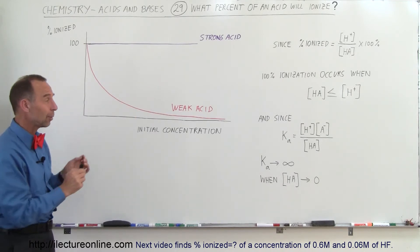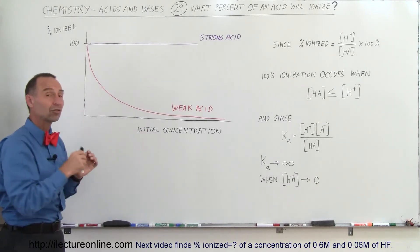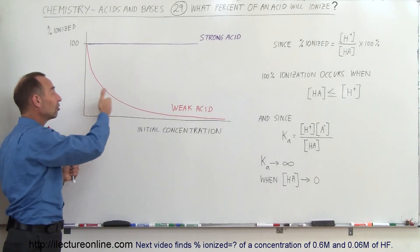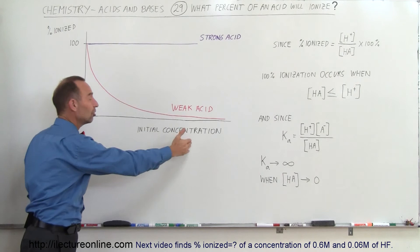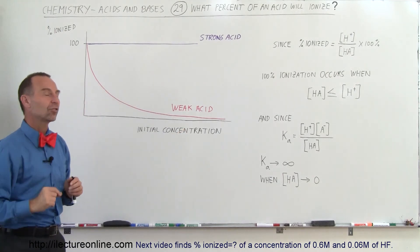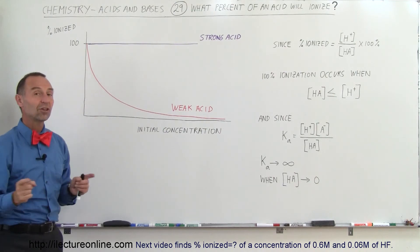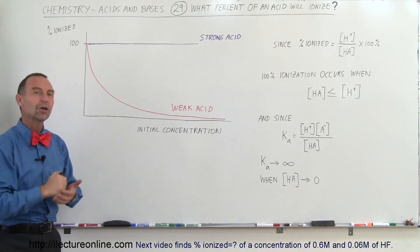We'll show you some more examples now, where we will vary the initial concentration of a weak acid, and we can see how the percentage of the ionization will change accordingly. Remember, a large initial concentration, small percentage of ionization. A small initial concentration, large percentage of ionization. So with the next examples, we'll show you how that works.